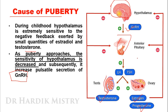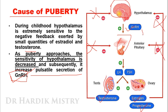Due to this negative feedback mechanism, GnRH as well as LH and FSH are inhibited from the hypothalamus and anterior pituitary respectively. As puberty approaches, the sensitivity of the hypothalamus is decreased, so the pulsatile secretion of GnRH increases, leading to increased LH and FSH levels, and ultimately increased testosterone, estrogen, and progesterone in males and females respectively. That is the cause of puberty.